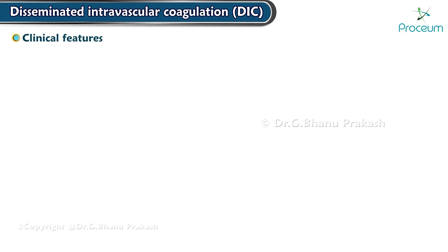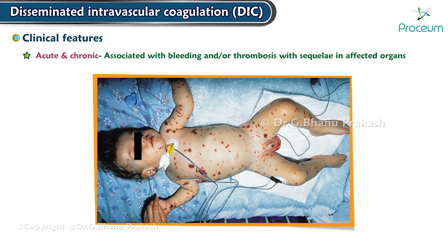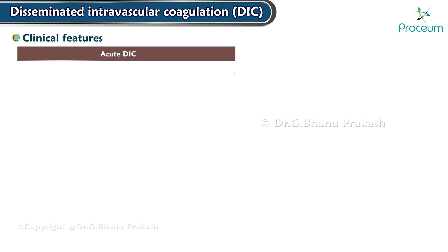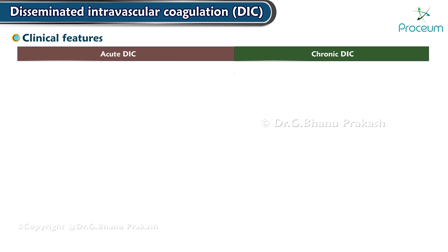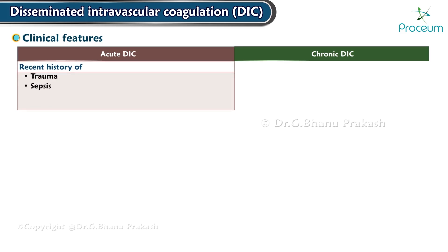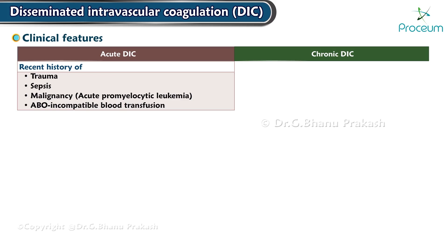Clinical features. Acute and chronic DIC can be associated with bleeding and/or thrombosis with sequelae in affected organs. In acute DIC, there is a recent history of trauma, sepsis, malignancy — especially acute promyelocytic leukemia — or ABO-incompatible blood transfusion.